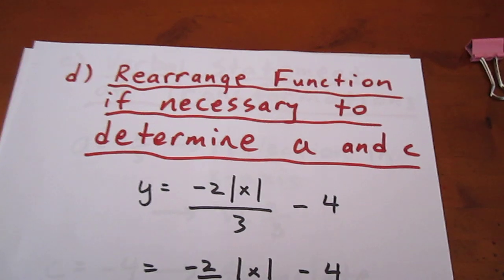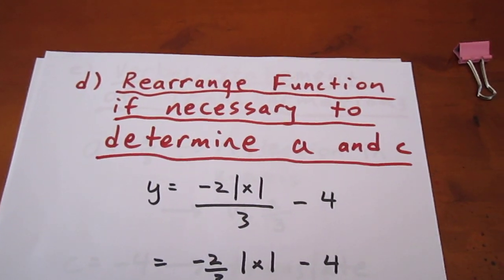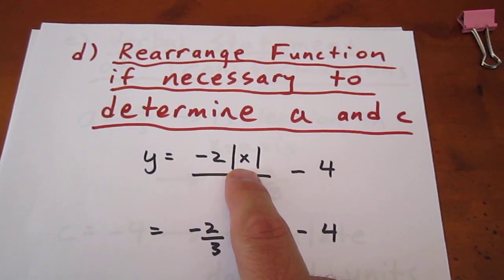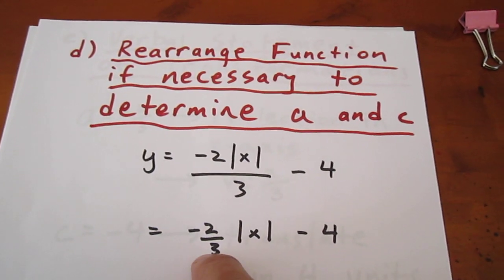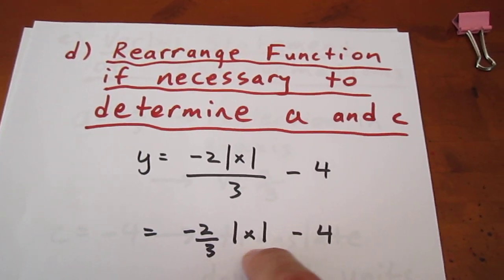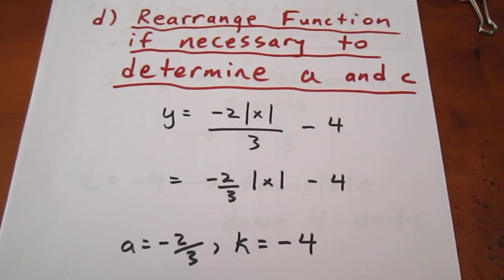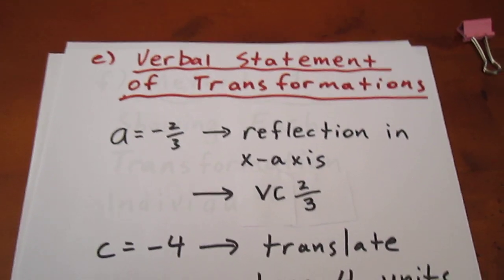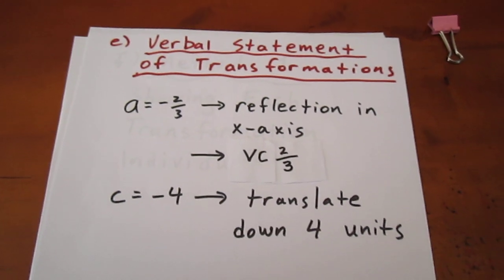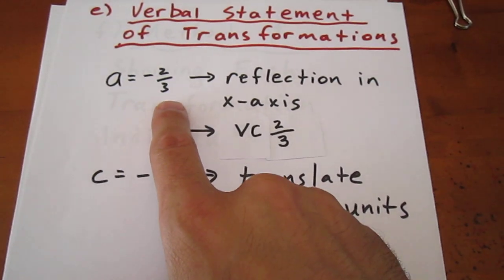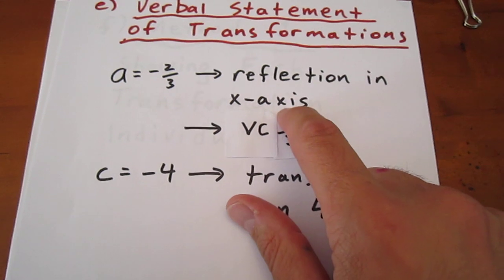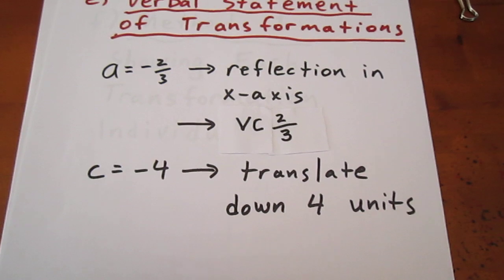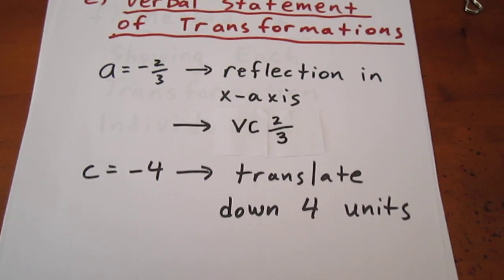We can then rearrange the function equation, if necessary, to determine a and c. Negative 2 times the absolute value of x all over 3 is the same as negative 2 over 3 times the absolute value of x, and then we're subtracting 4. So what we have is an a value of negative 2 thirds and a c value of negative 4. A verbal description: when a equals negative 2 thirds, we have a reflection in the x-axis followed by a vertical compression by a factor of 2 thirds. And when c equals negative 4, we have a translation down 4 units.